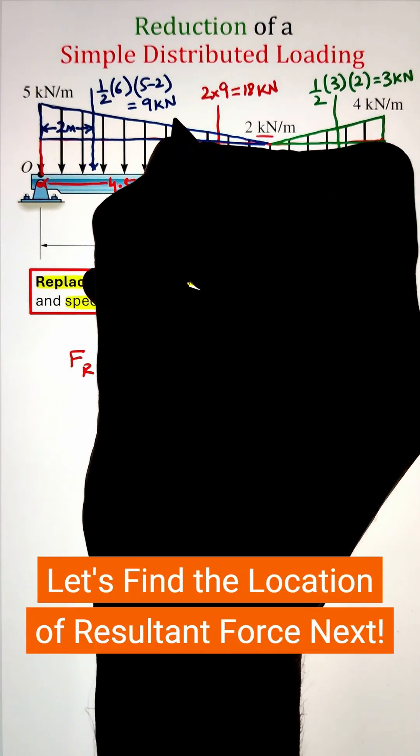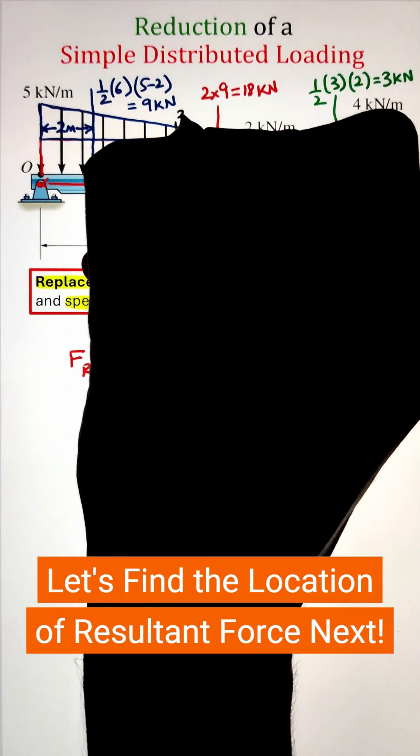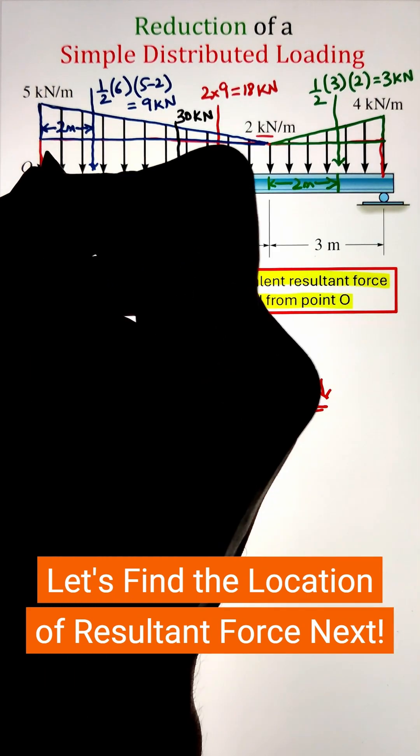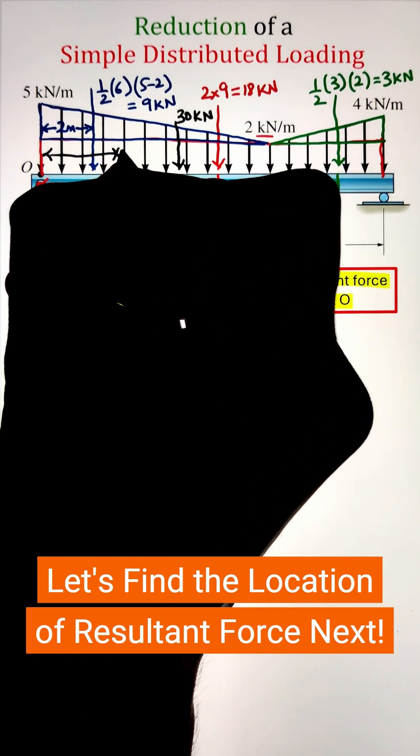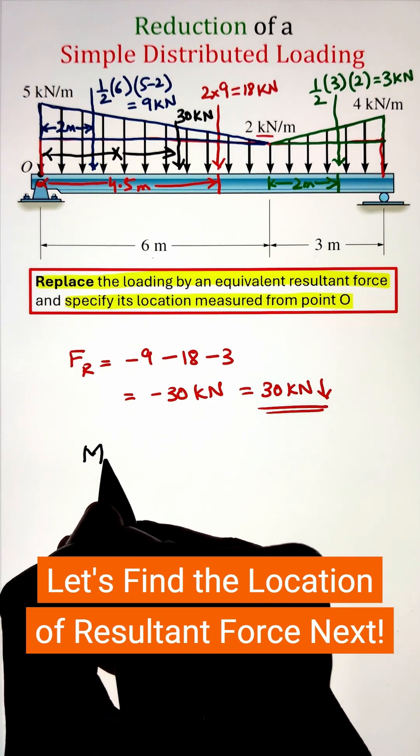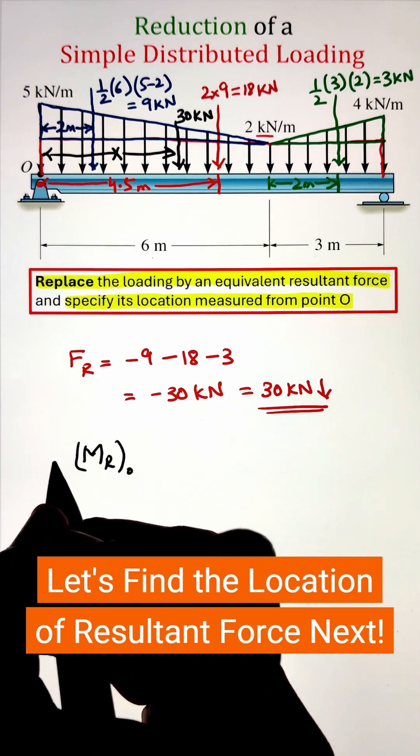Once we have the resultant force, let's identify the position on the beam. So to start, we can draw the resultant force on the beam and specify a distance x with respect to point O as we are solving for this variable x.